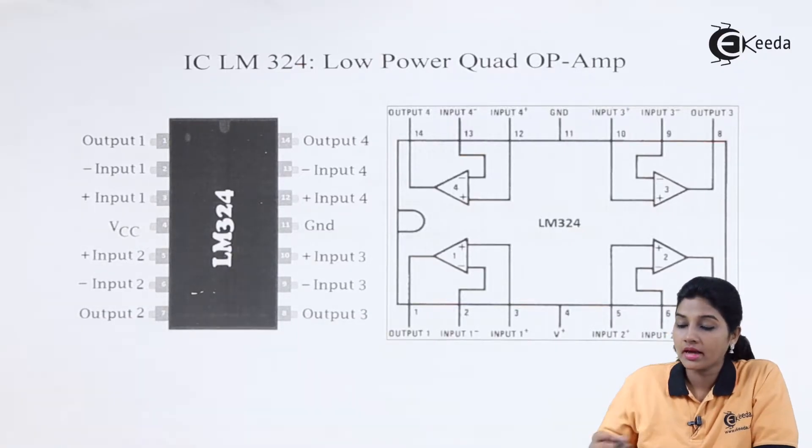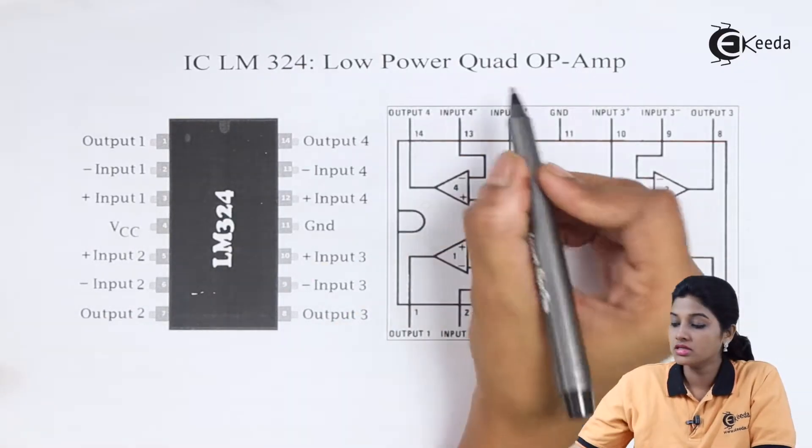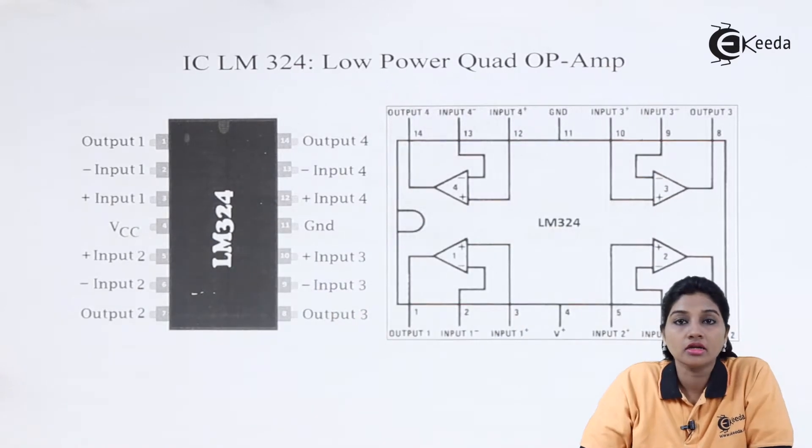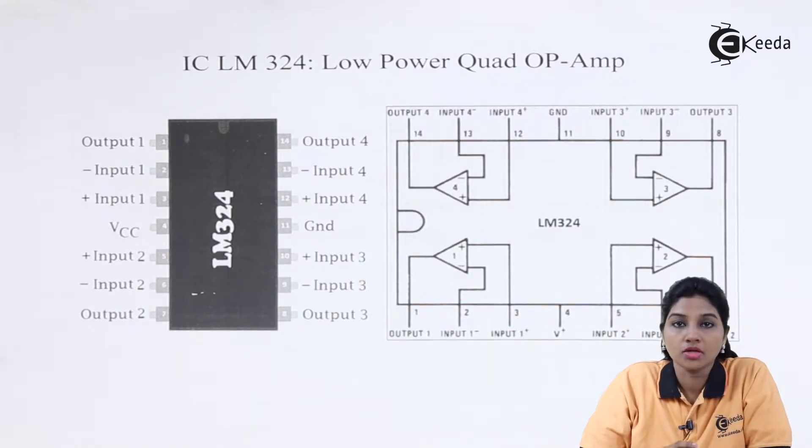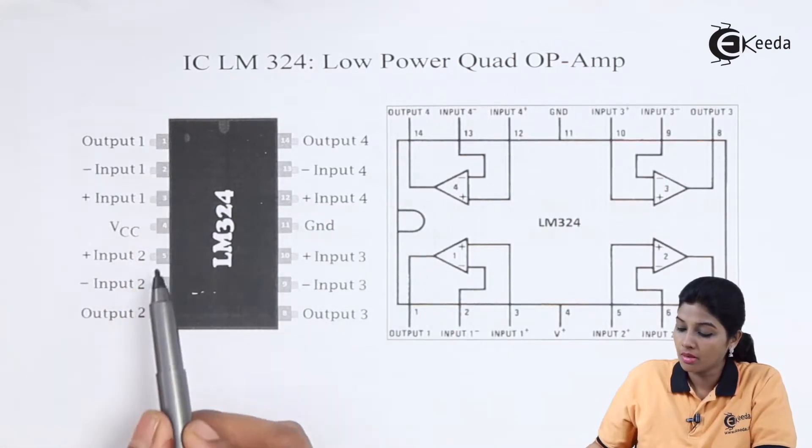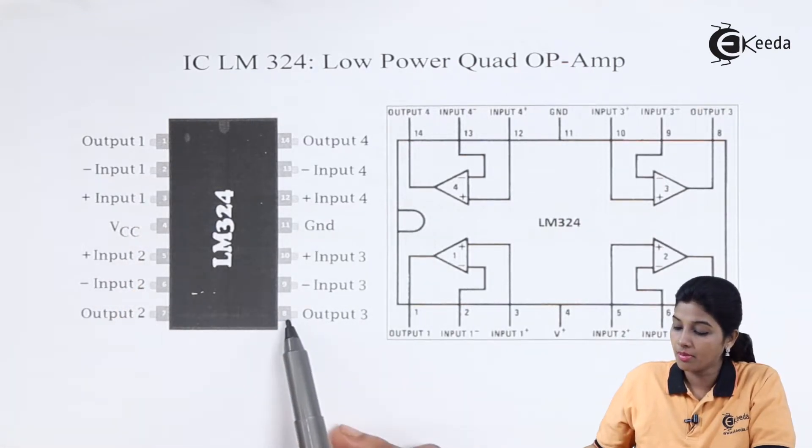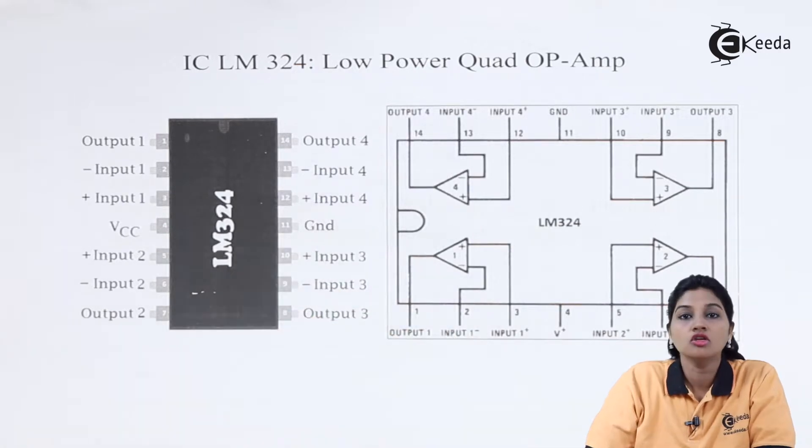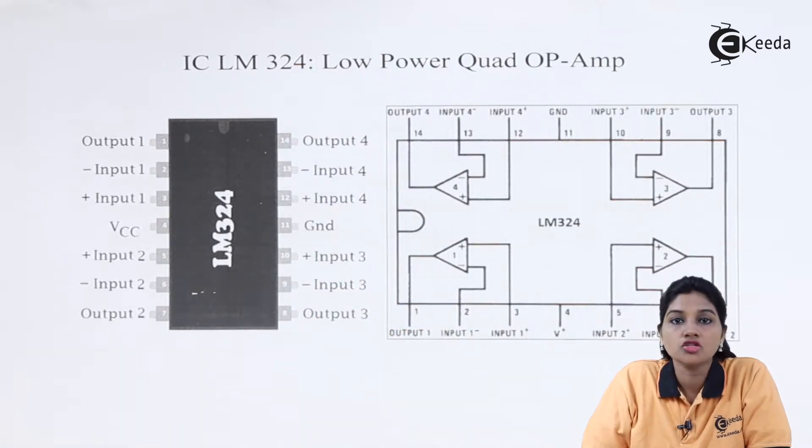So in case of pin diagram, as its name indicates, it's quad operational amplifier, it consists of four independent op amps. Therefore, the IC has four output pins. That means pin number one, pin number seven, pin number eight and pin number 14. So these are the output pins which act as the four output pins of operational amplifier.